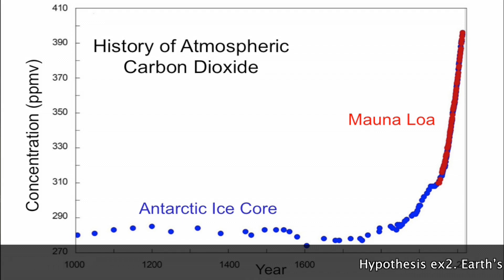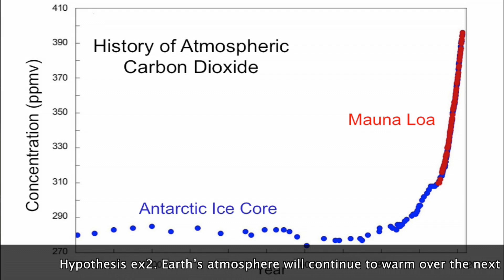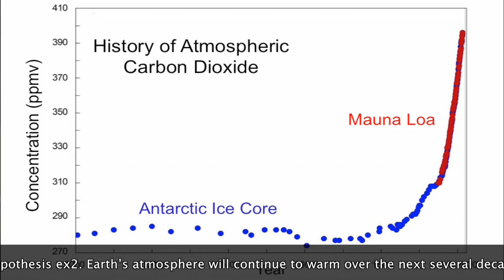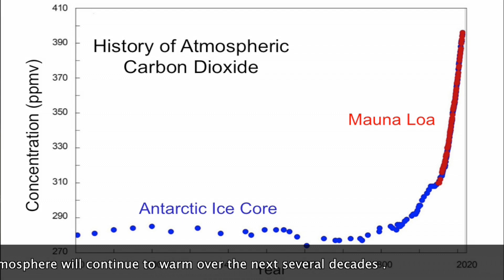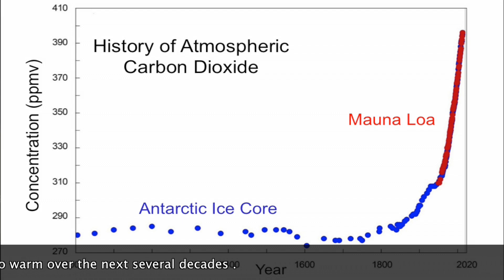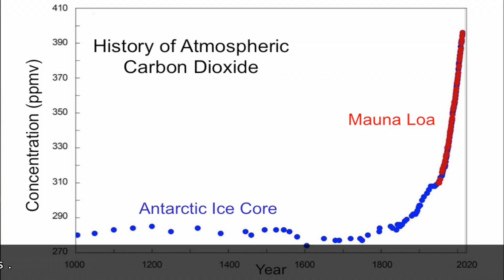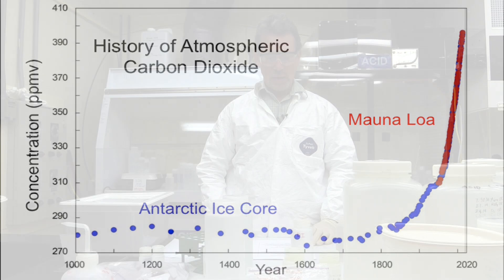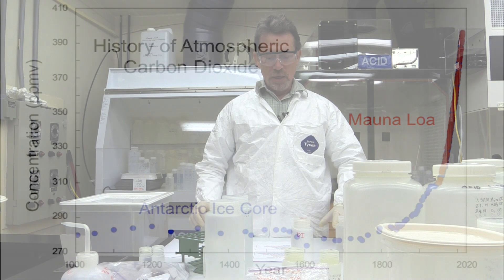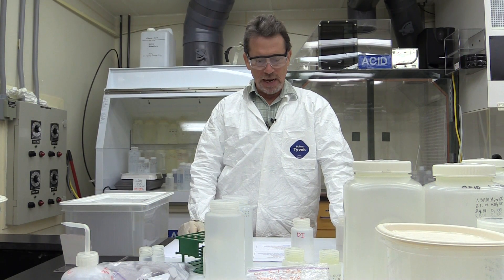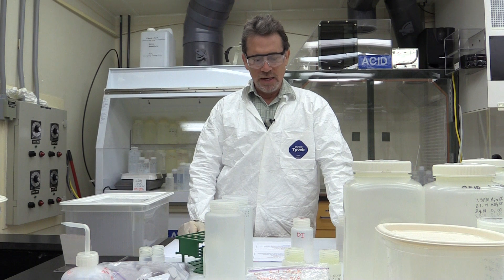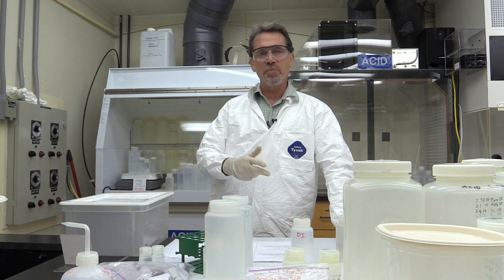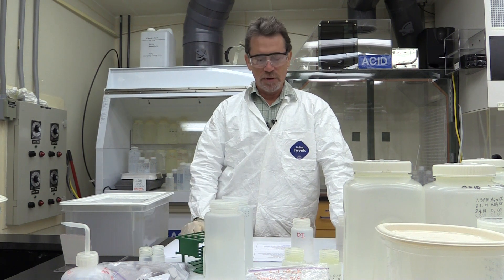Another inference we might make from the temperature record is that Earth's atmosphere will continue to warm over the next several decades — again, an inference or hypothesis, readily testable by making temperature measurements into the future. While we might define a hypothesis as a tentative inference built on observations made to test the inference, a theory takes it a step further.